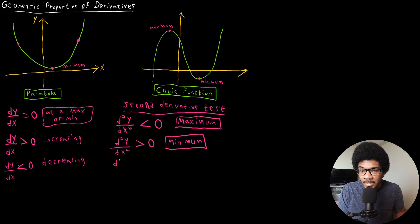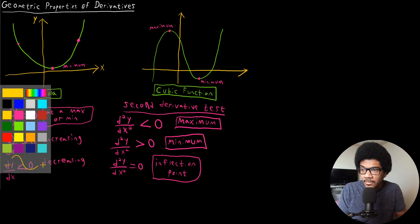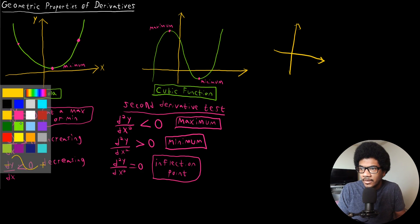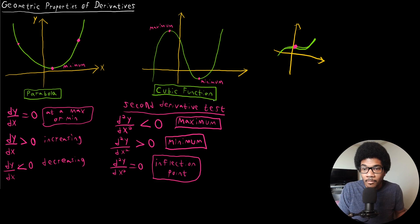There's also another possibility: if the second derivative is equal to zero, then you're at what's called an inflection point. An inflection point is not necessarily a max or a min — it just represents a point where the function changes direction. For example, a function might have an increasing section, then go nearly straight, then curve up again. That transition point is an inflection point. It has zero curvature at that point and should be very close to a straight line.